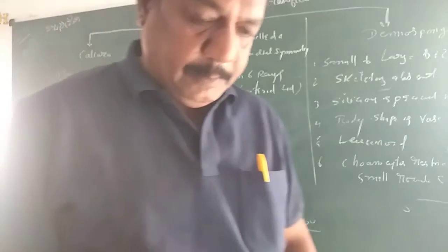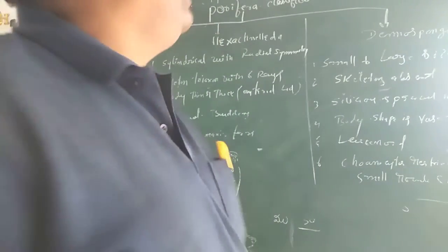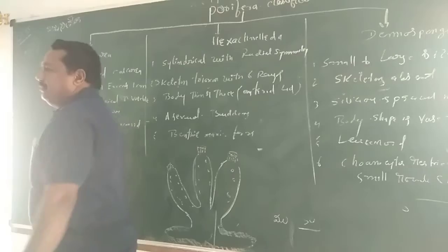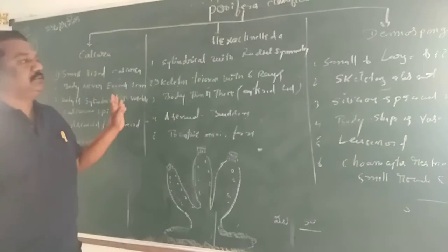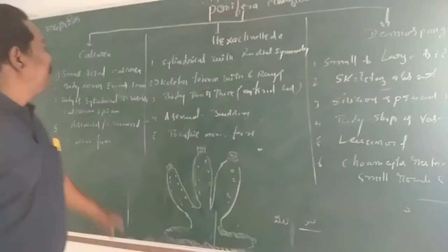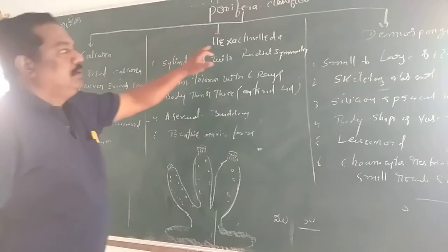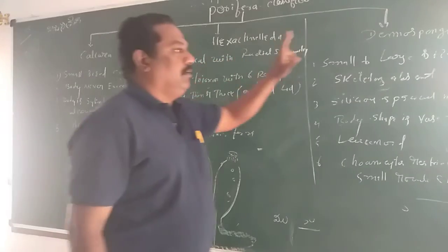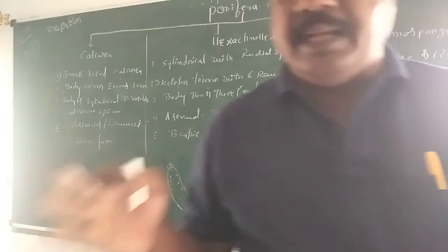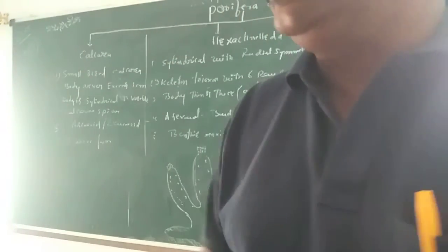Today I am discussing about the classification of Porifera. These Porifera animals are classified into three main categories — three main groups.